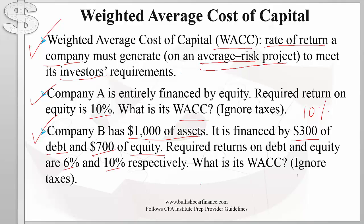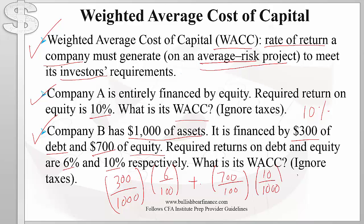The weight assigned to bondholders is simply three hundred dollars divided by one thousand dollars, multiplied by the expected return on bonds of six percent. Then we add the weight for shareholders multiplied by the required return on equity. We get a weighted average cost of capital of 8.8 percent. This makes clear why we call it a weighted average cost of capital.